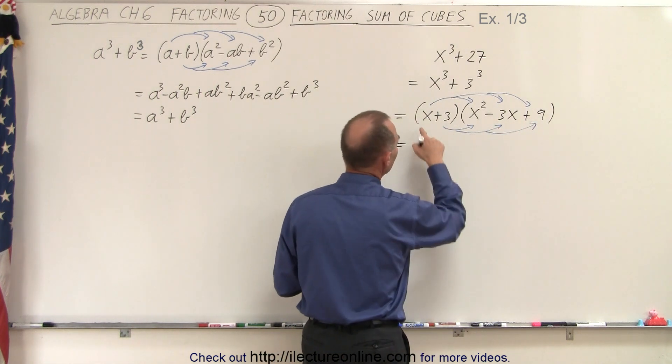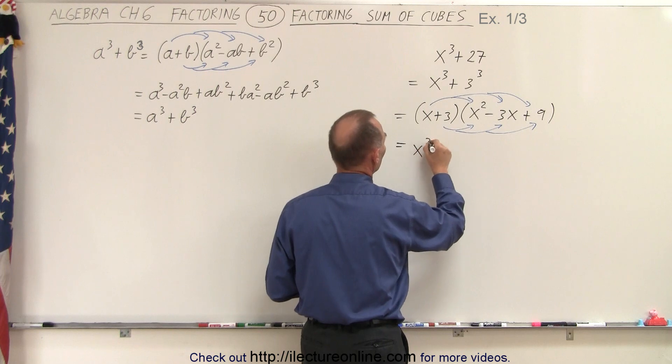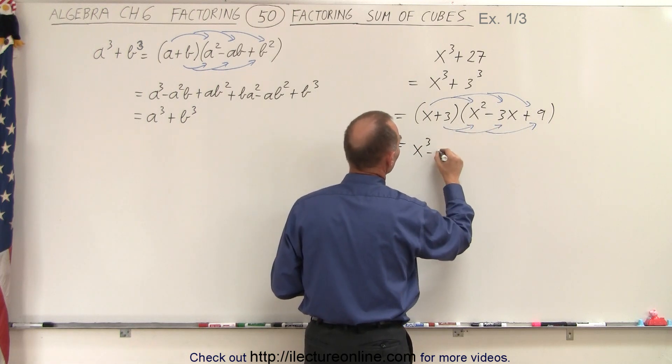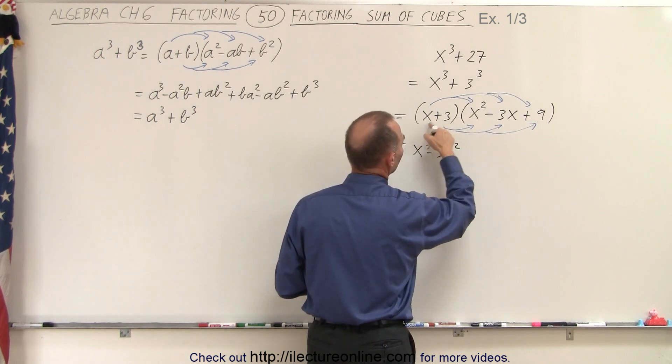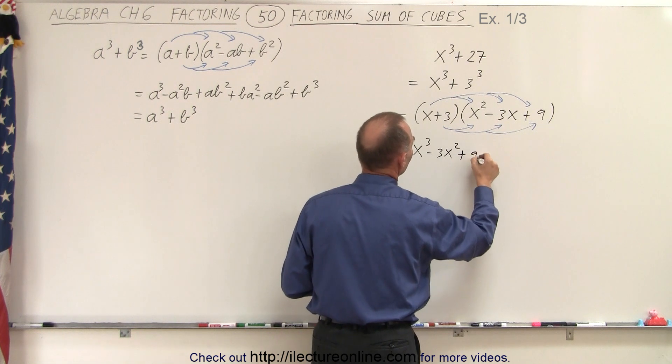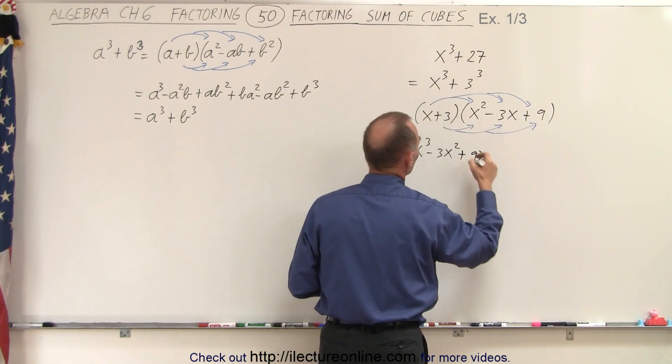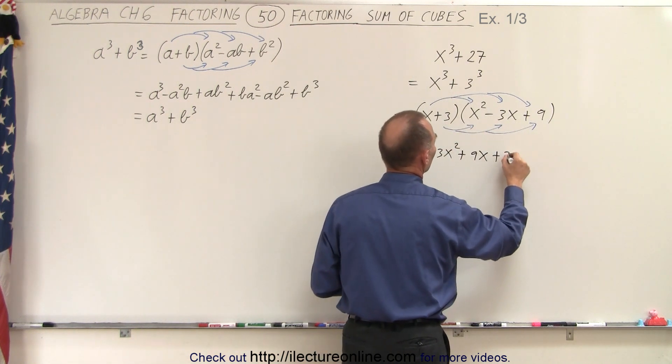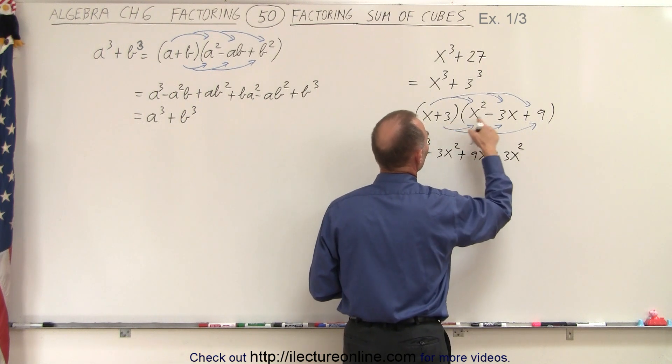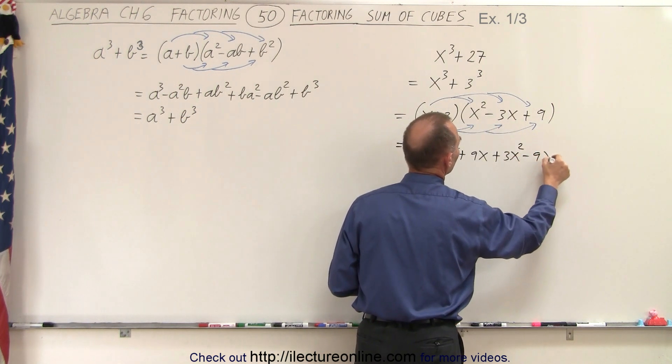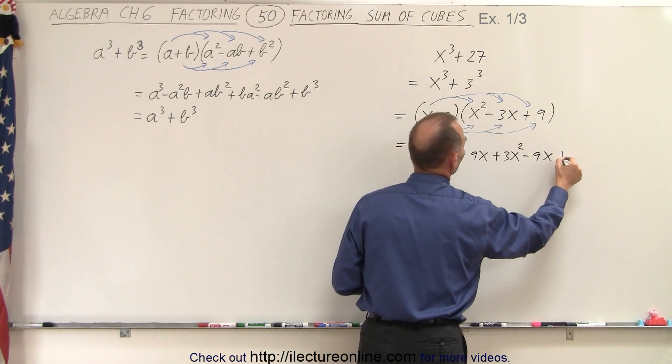And so this would be x times x squared, which is x cubed, x times minus 3x minus 3x squared, x times 9, that would be plus 9x. And then 3 times x squared, that would be plus 3x squared, 3 times minus 3x is minus 9x, and 3 times 9 is plus 27.